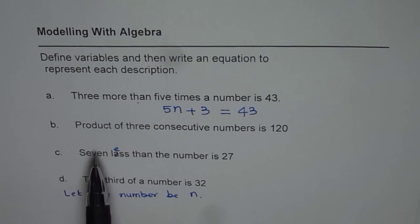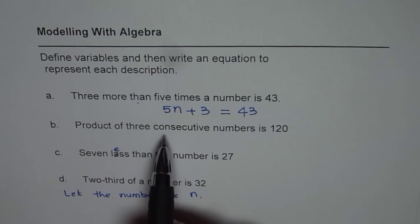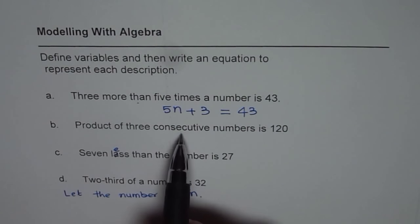Now the second statement is product of 3 consecutive numbers is 120. Now consecutive numbers are what? These are the numbers which come together.